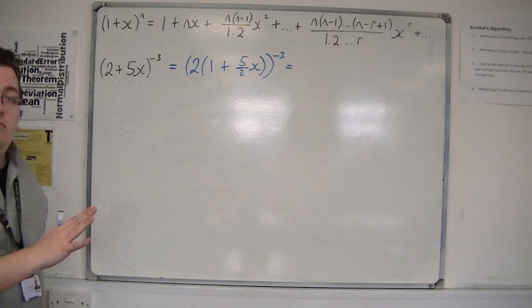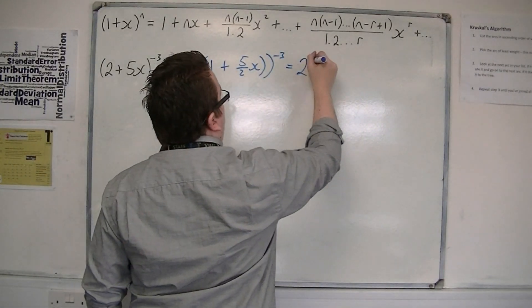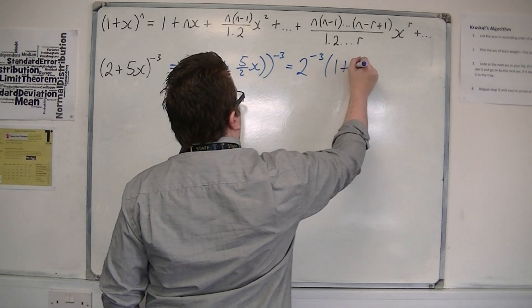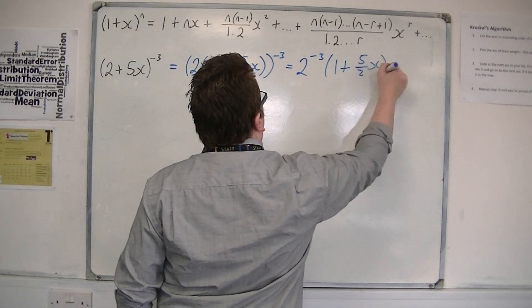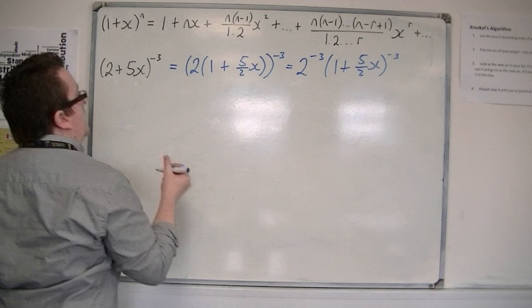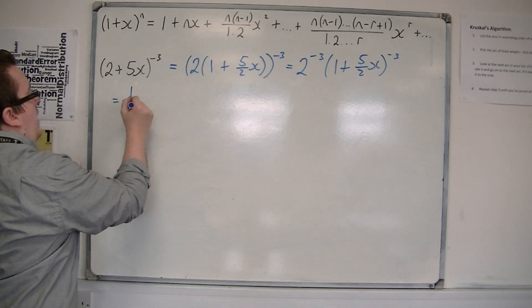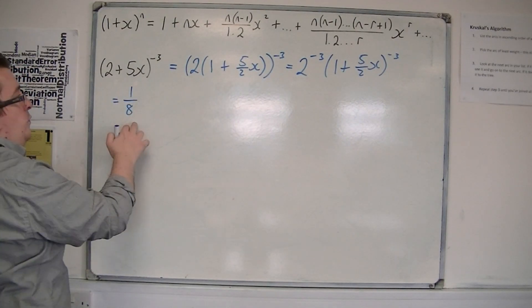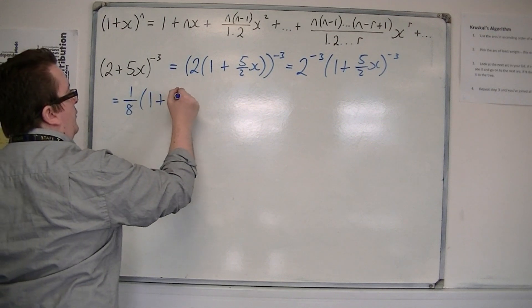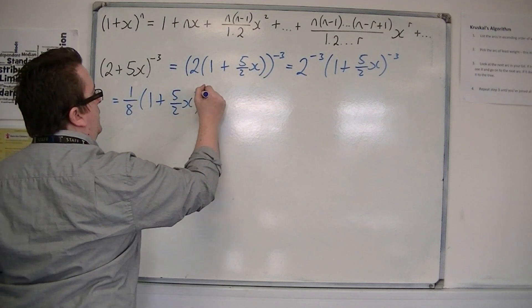So the 2 on the outside of the bracket, that means we've got 2 to the minus 3 lots of (1 + 5/2 x) to the minus 3. And so we've actually got 1/8, because that's 2 to the minus 3, lots of (1 + 5/2 x) to the minus 3.